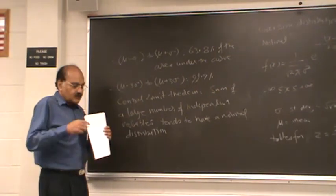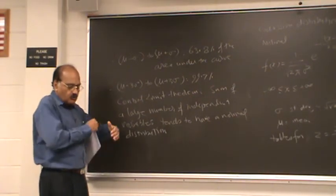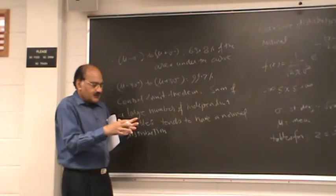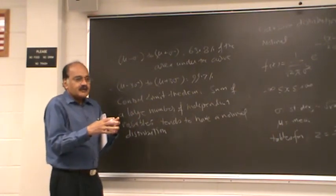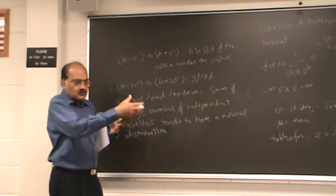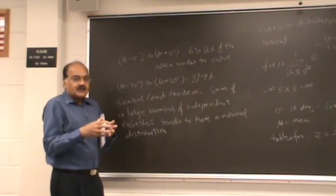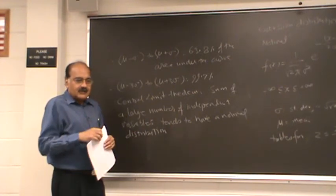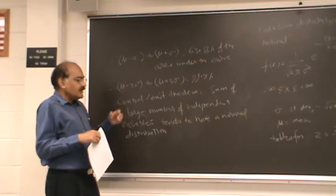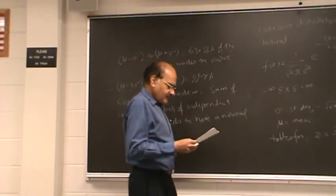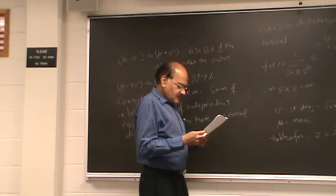So for example, let us say if you are considering delays through a long path, propagation delays, and propagation delay is somewhat random. Then, if it is a sum of a few propagation delays, then the overall propagation delay can be approximated by a normal distribution.